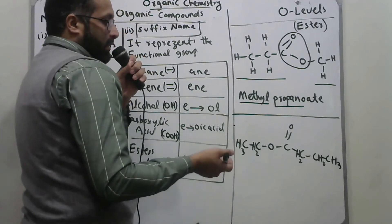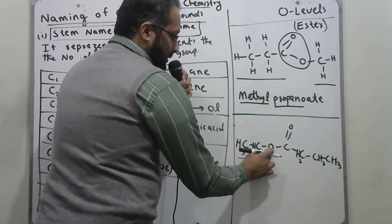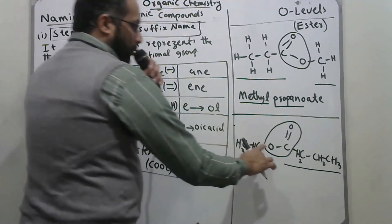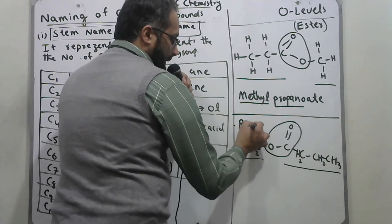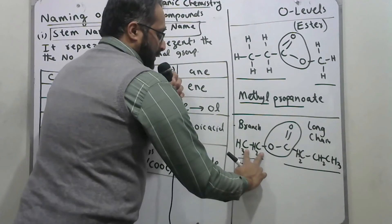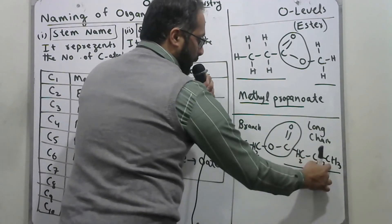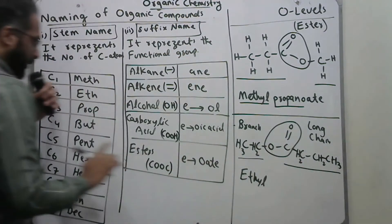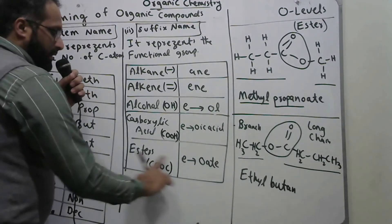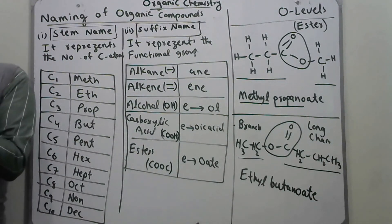For one more ester example: count how many carbons are directly bonded with oxygen — treat these as a branch. Those carbons give 'ethyl'. The remaining chain has 1, 2, 3, 4 carbons — four carbons gives 'butane'. Replacing 'e' with 'oate' for esters, the final name is 'ethyl butanoate'. This concludes the naming of organic compounds with examples.